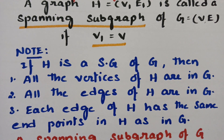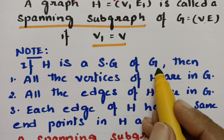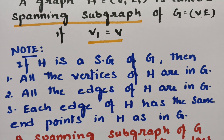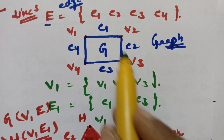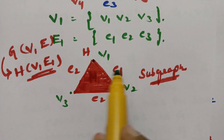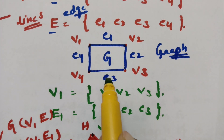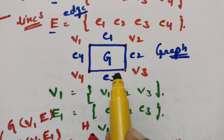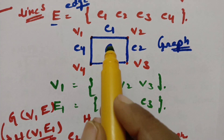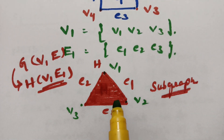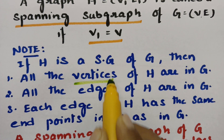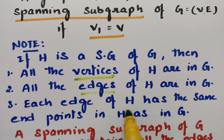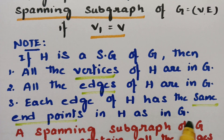Here is a small note. If H is a subgraph of the main graph G, then all the vertices of H are in G. The vertices V1, V2, V3 are all in the main set, and the edges E1, E2, E3 are all edges in the main set. All vertices, all edges, and all endpoints of H come from the main graph G — we take a few from G and create a smaller graph, and that is the subgraph.